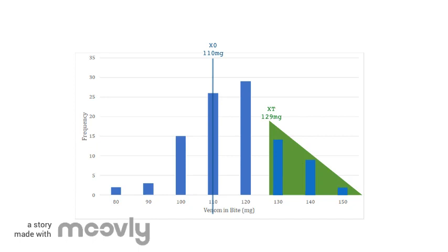The truncation point, which represents the cutoff point for my selected population, is shown by the left edge of this triangle and the XT label at around 129 milligrams. The mean of this selected population is here at about 136 milligrams, labeled as XS.